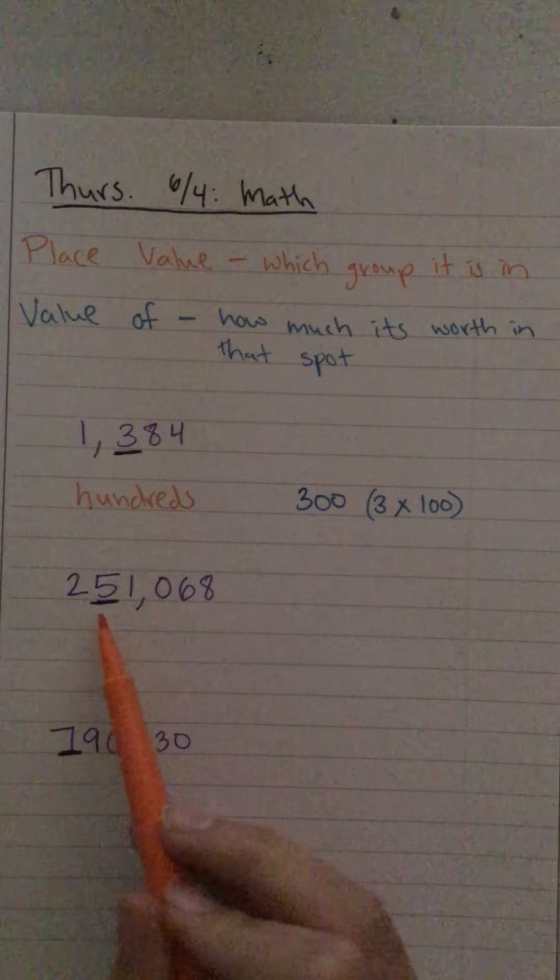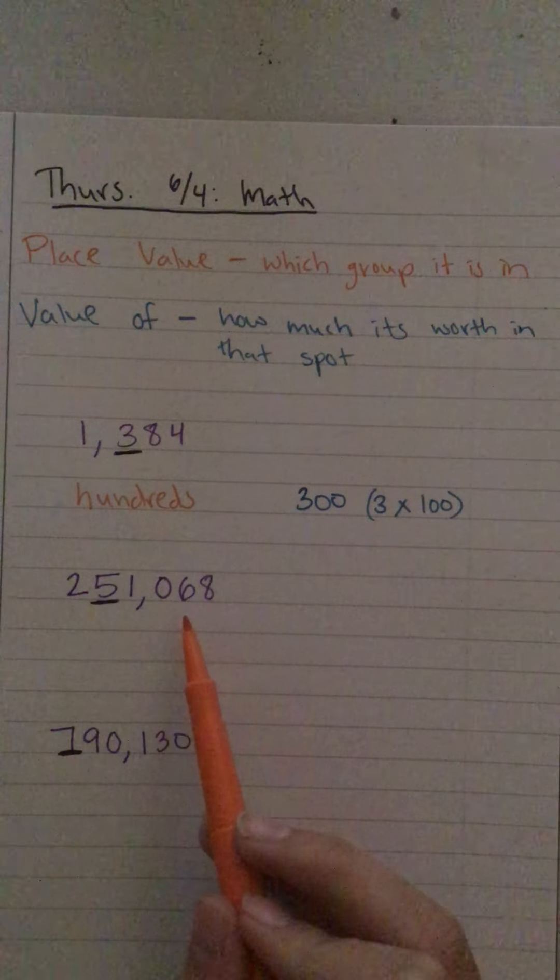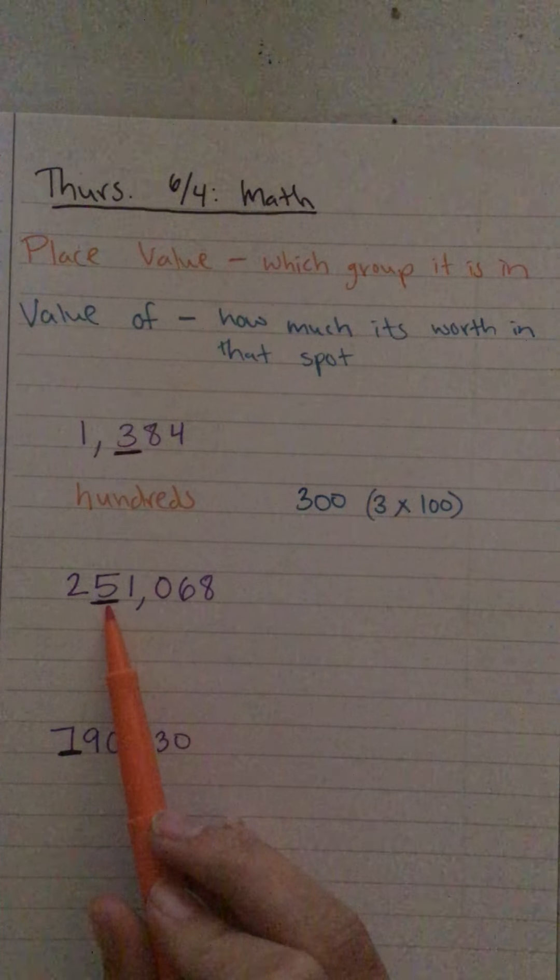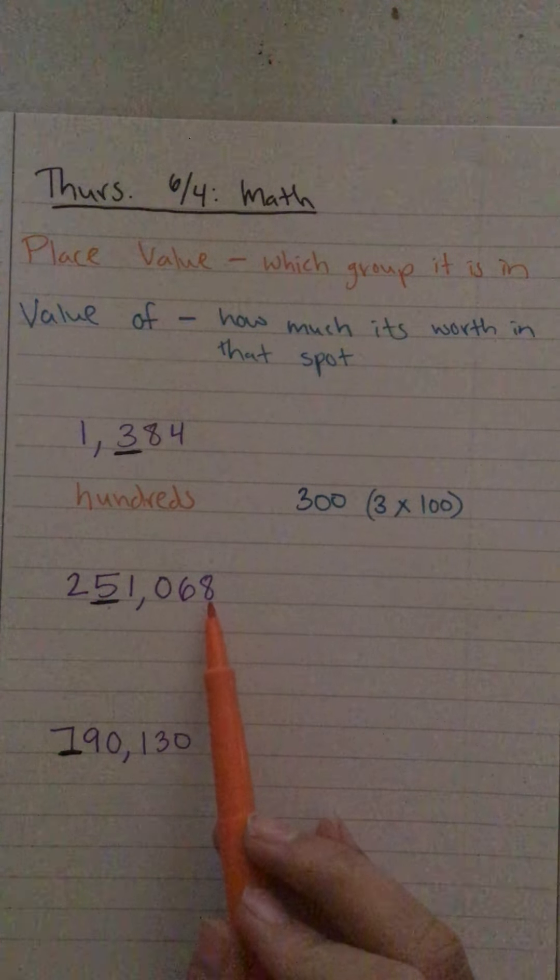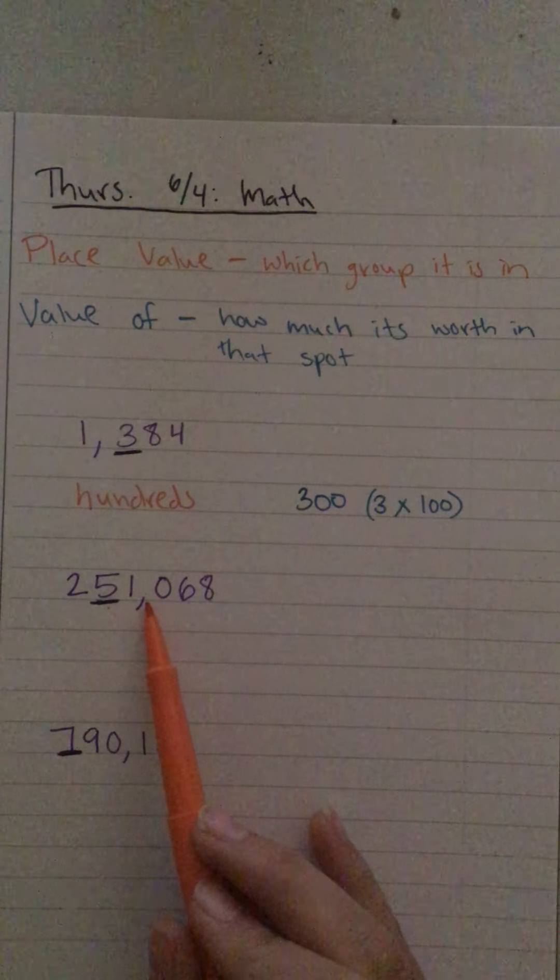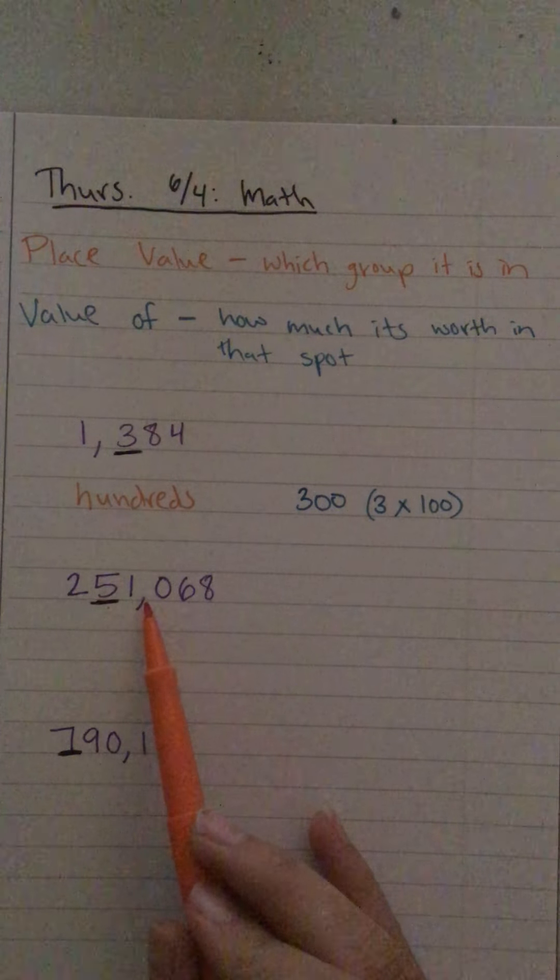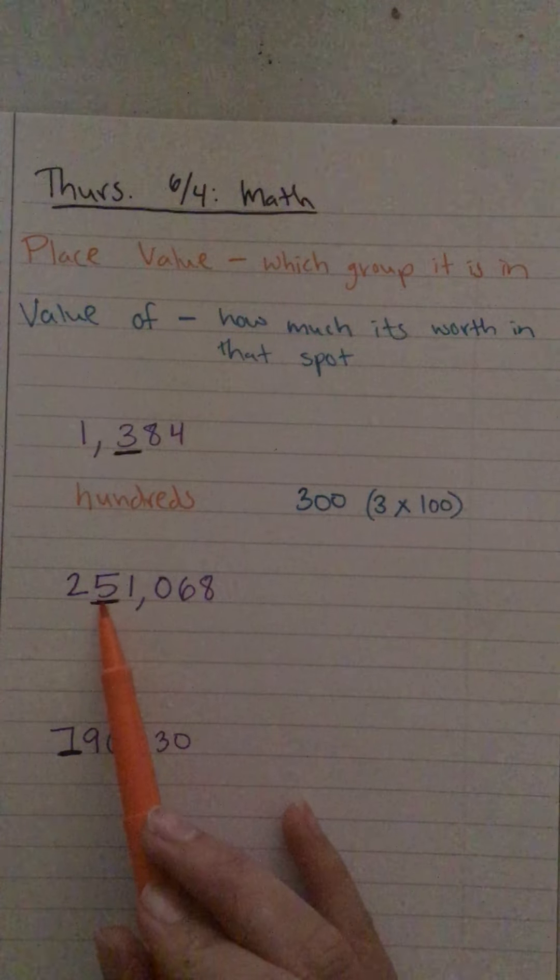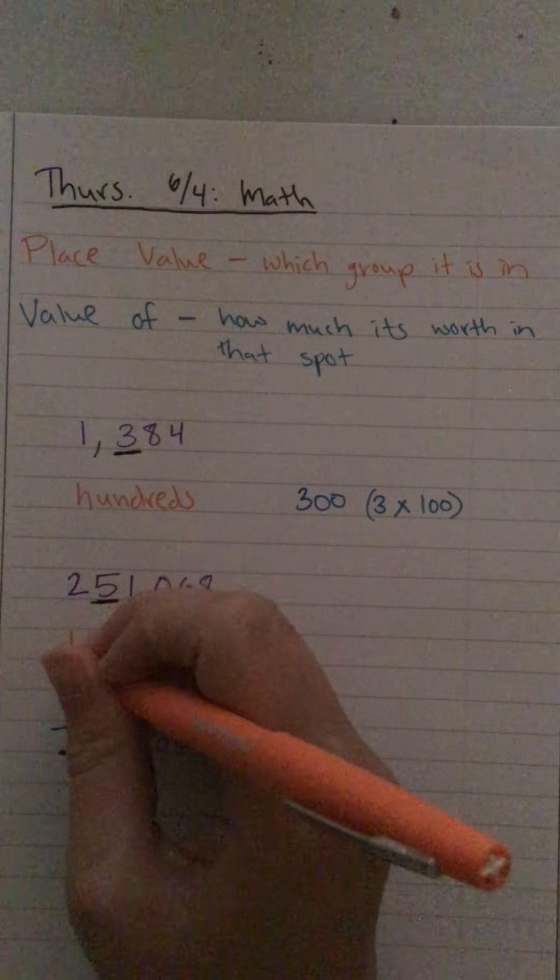Two hundred fifty-one thousand sixty-eight. I underline that five, so I have to jump over ones, tens, hundreds. Then that comma tells me I'm going to the thousands period, so thousands, ten thousands - that five is in the ten thousands place.